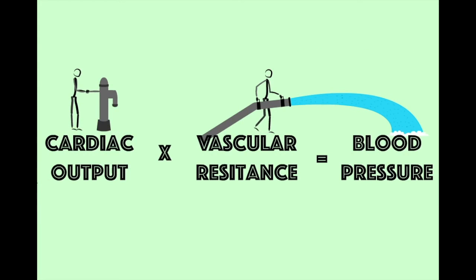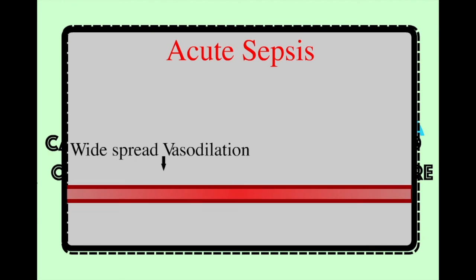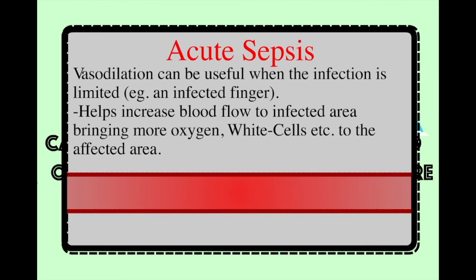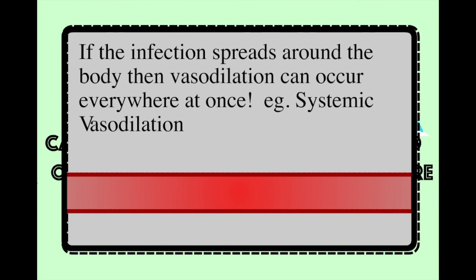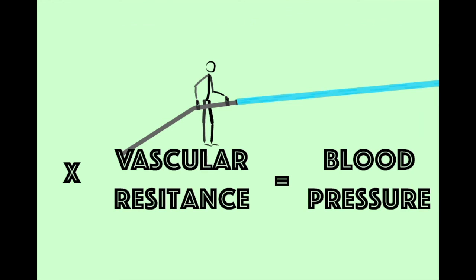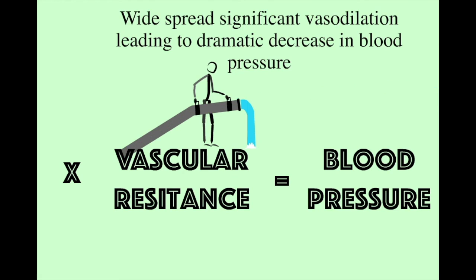One of the symptoms of acute sepsis is widespread vasodilation. Vasodilation is helpful when an infection occurs in just one area of the body — for example, if you have an infected finger, vasodilation within that finger allows more white cells into the area to help combat the infection. However, when the infection spreads to other parts of the body, vasodilation also becomes widespread. This will significantly reduce resistance to cardiac output and lead to a significant drop in blood pressure.